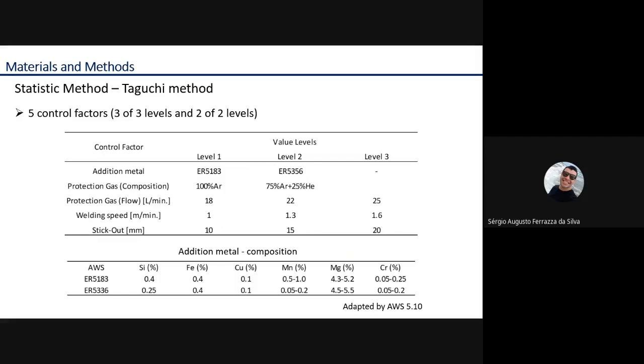The authors chose five control factors: three control factors with three levels and two control factors with two levels. In the table, we can see the control factors selected. Additional metal: level 1 ER5183, level 2 ER5356. In the table below, we can see the composition of additional metal.